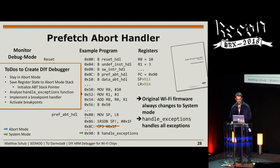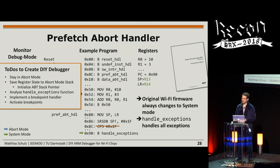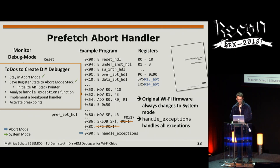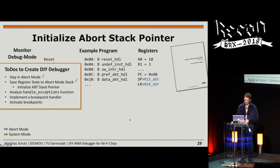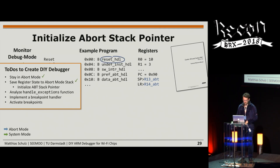To stay in abort mode, we simply NOP the instruction that switches to system mode. The other instruction is also easily changed: instead of pushing the register state onto the system mode stack, we change the value to push onto the abort mode stack.